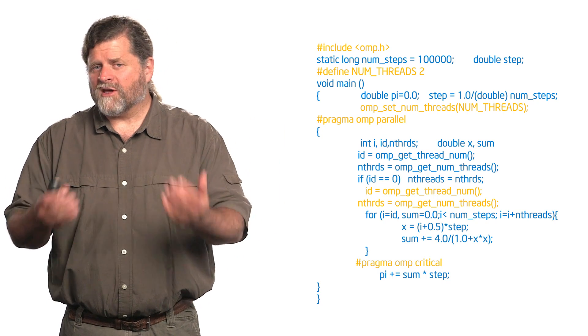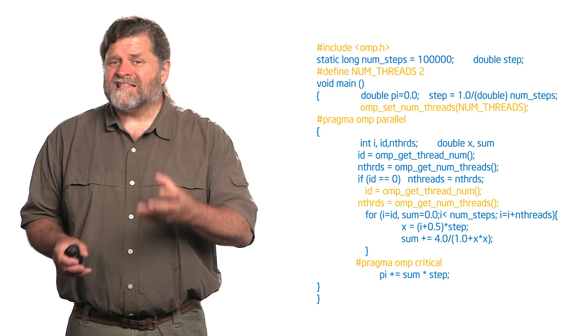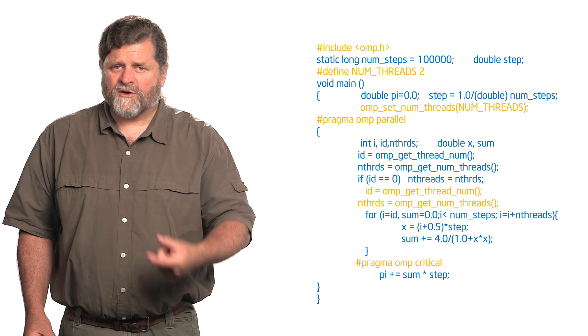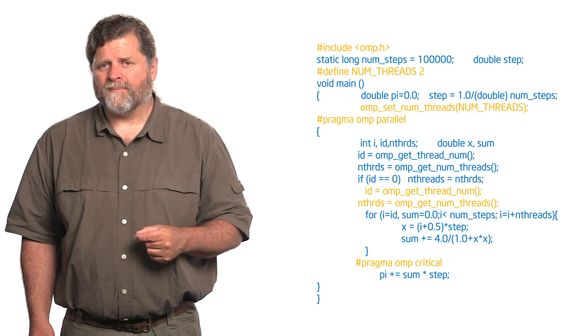But I still have to get that sum back into my shared value PI in some way. It's very important to appreciate that at the end of a parallel region, the thread logically goes away. That means anything I put on the stack goes away. So now the fact that I have a variable sum sitting on the stack for each thread — it's going to go away. I'm in trouble. I've got to save it into a global.